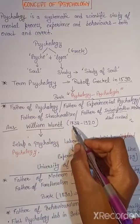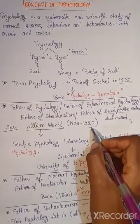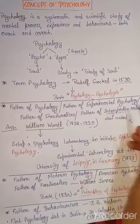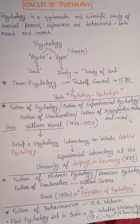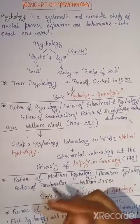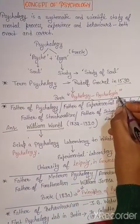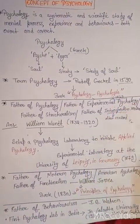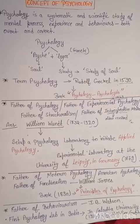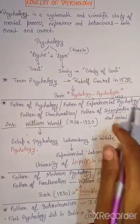इनका जो birth हुआ था वो 1832 में हुआ था, और death 1920 में हुई थी. तो experimental psychology के father इन्हें क्यों कहा जाता है? क्योंकि इन्होंने first experimental laboratory established की थी — Leipzig में, in Germany, 1879 में.